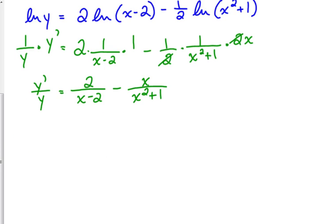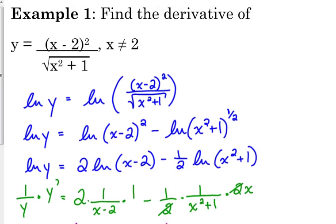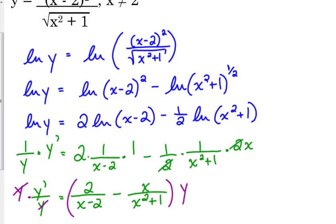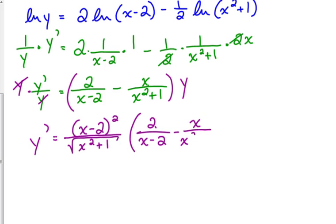Now we haven't actually found the derivative yet because we've got y prime over y. We've taken the derivative, but we haven't isolated it. So we need to multiply both sides by y. When we do that, we need to write it as what y originally equaled: x minus 2 squared over the square root of x squared plus 1 times 2 over x minus 2 minus x over x squared plus 1.